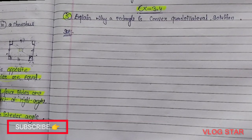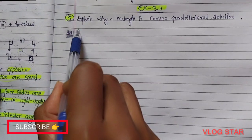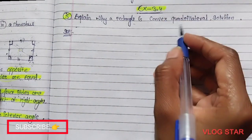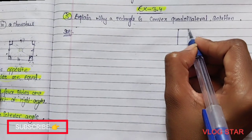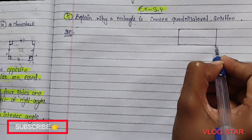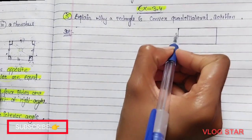Hello, welcome. Let's discuss Class 8, Exercise 3.4, Question Number 5. The question is: Explain why a rectangle is a convex quadrilateral. In the solution, I am drawing a rectangle, so here you can see a rectangle.